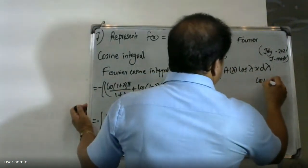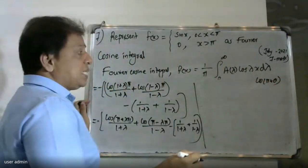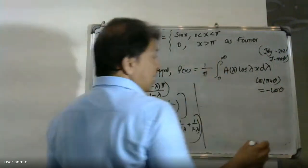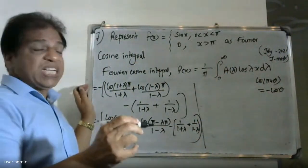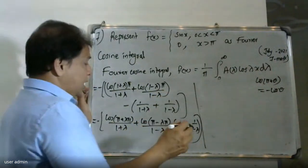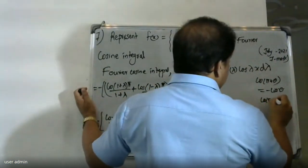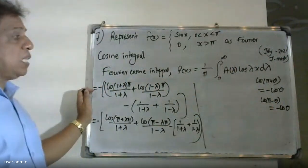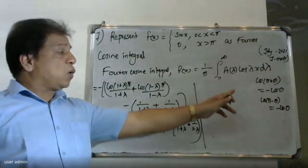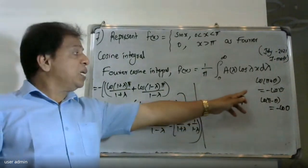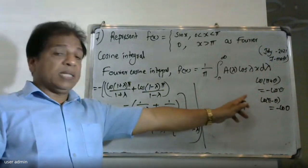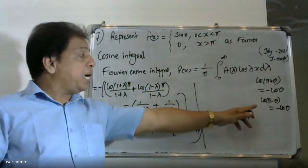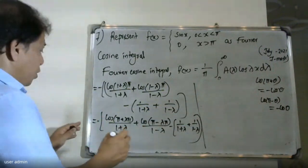Now we apply the identity: cos(π + θ) is in the third quadrant, so cos is negative, giving -cos(θ). Similarly, cos(π - θ) is in the second quadrant, so cos is also negative, giving -cos(θ). Therefore cos(1+λ)π = cos(π + λπ) = -cos(λπ), and cos(1-λ)π = cos(π - λπ) = -cos(λπ).